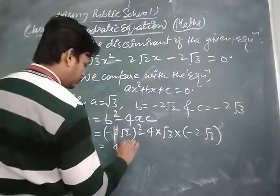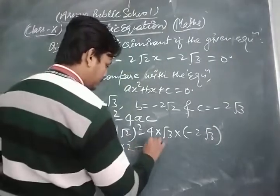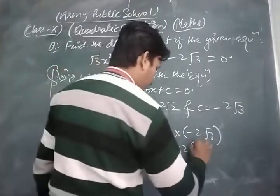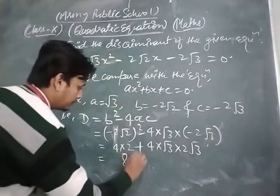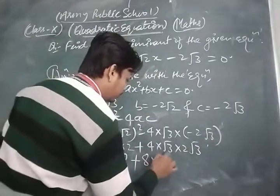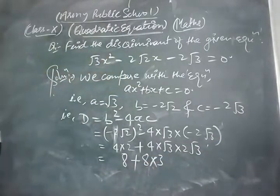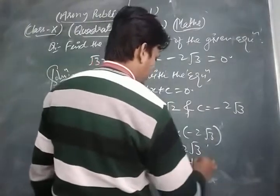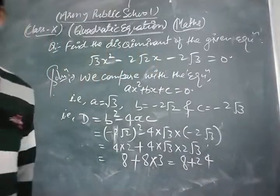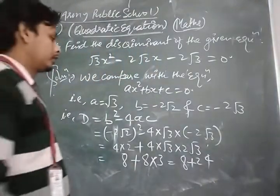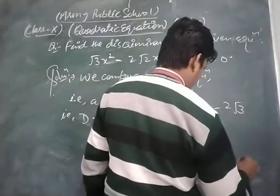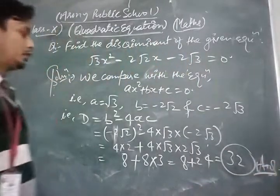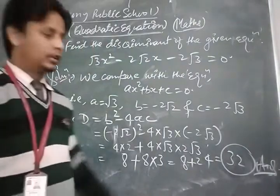Simplifying: (-2√2)² = 4 × 2 = 8. Then minus times minus gives plus, so we add 4 × √3 × 2√3 = 4 × 2 × 3 = 24. Therefore D = 8 + 24 = 32.